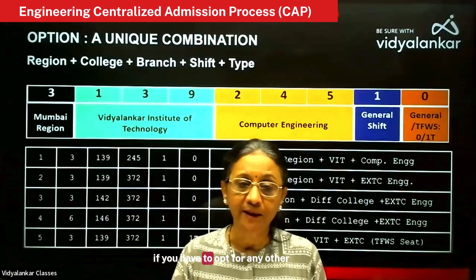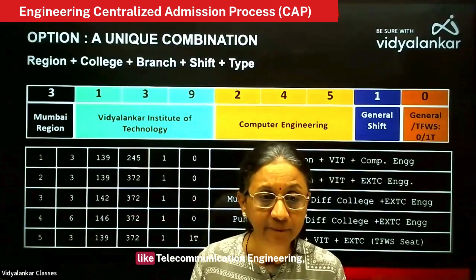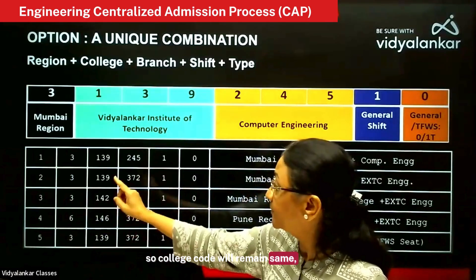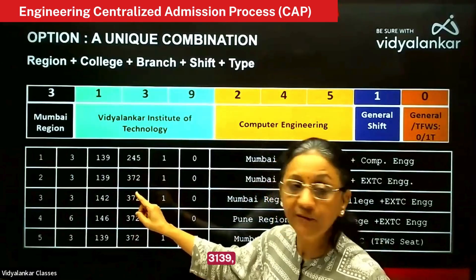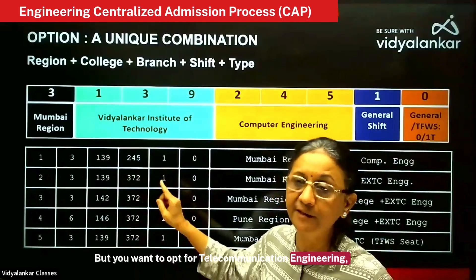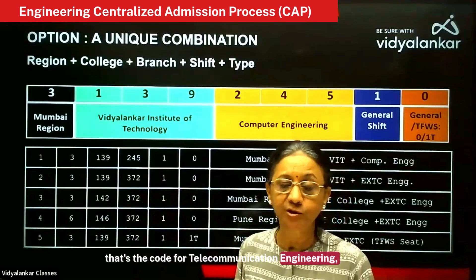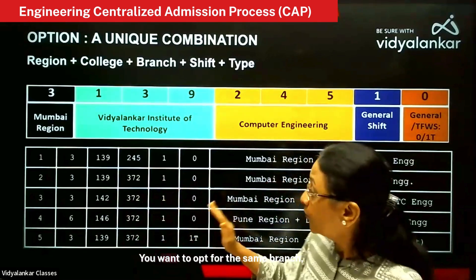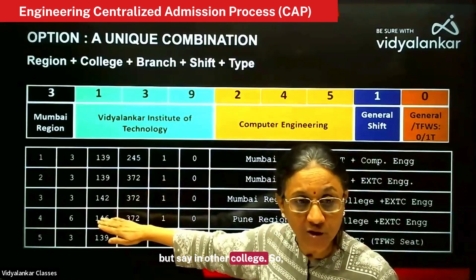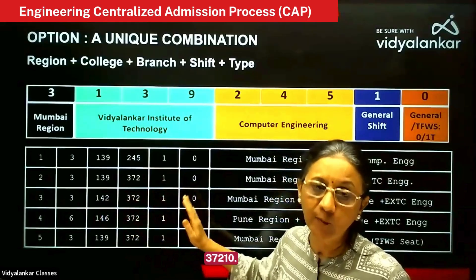If in the same college you want to opt for another branch — say telecommunication engineering — the college code will remain the same, 3139 for Vidyalankar Institute of Technology, but you opt for telecommunication engineering, so 372 is the code for telecommunication engineering, General Shift, General Seat. If you want the same branch but in a different college, the college code will change — for example 3142-372-10.